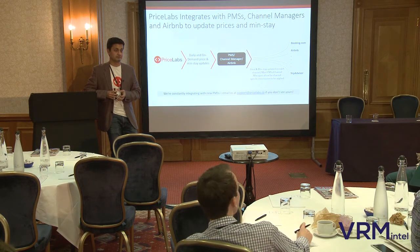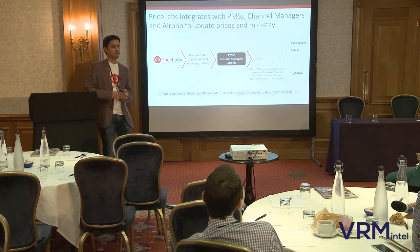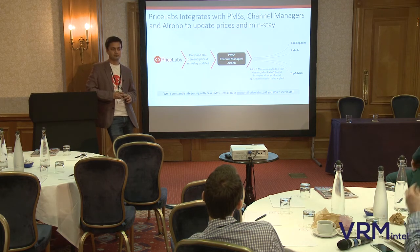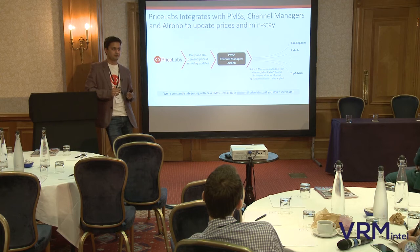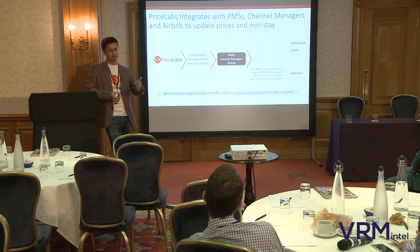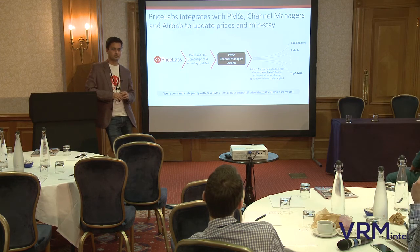Q: What external data do you use? A: We use hotel data from GDS and Airbnb data. Airbnb covers most markets around the world, and because most people use a channel manager, their calendars are synced across platforms. So even if a booking came through HomeAway or Booking.com, the Airbnb calendar will reflect that, painting a pretty complete picture of what's happening in the area.